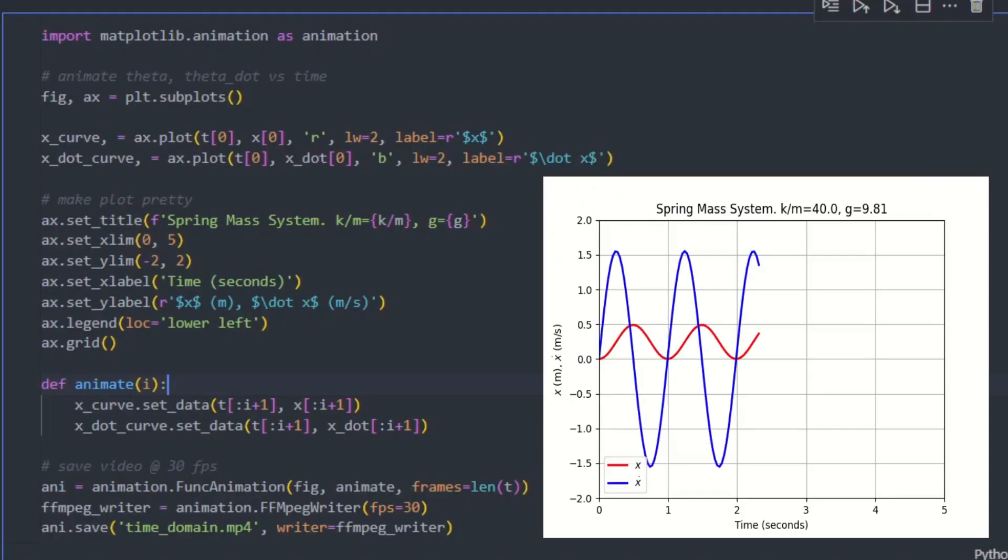With some slight modifications to our code, we can animate this graph. Every video frame, we redraw the position and velocity curves. Then we'll save this to an mp4 file.